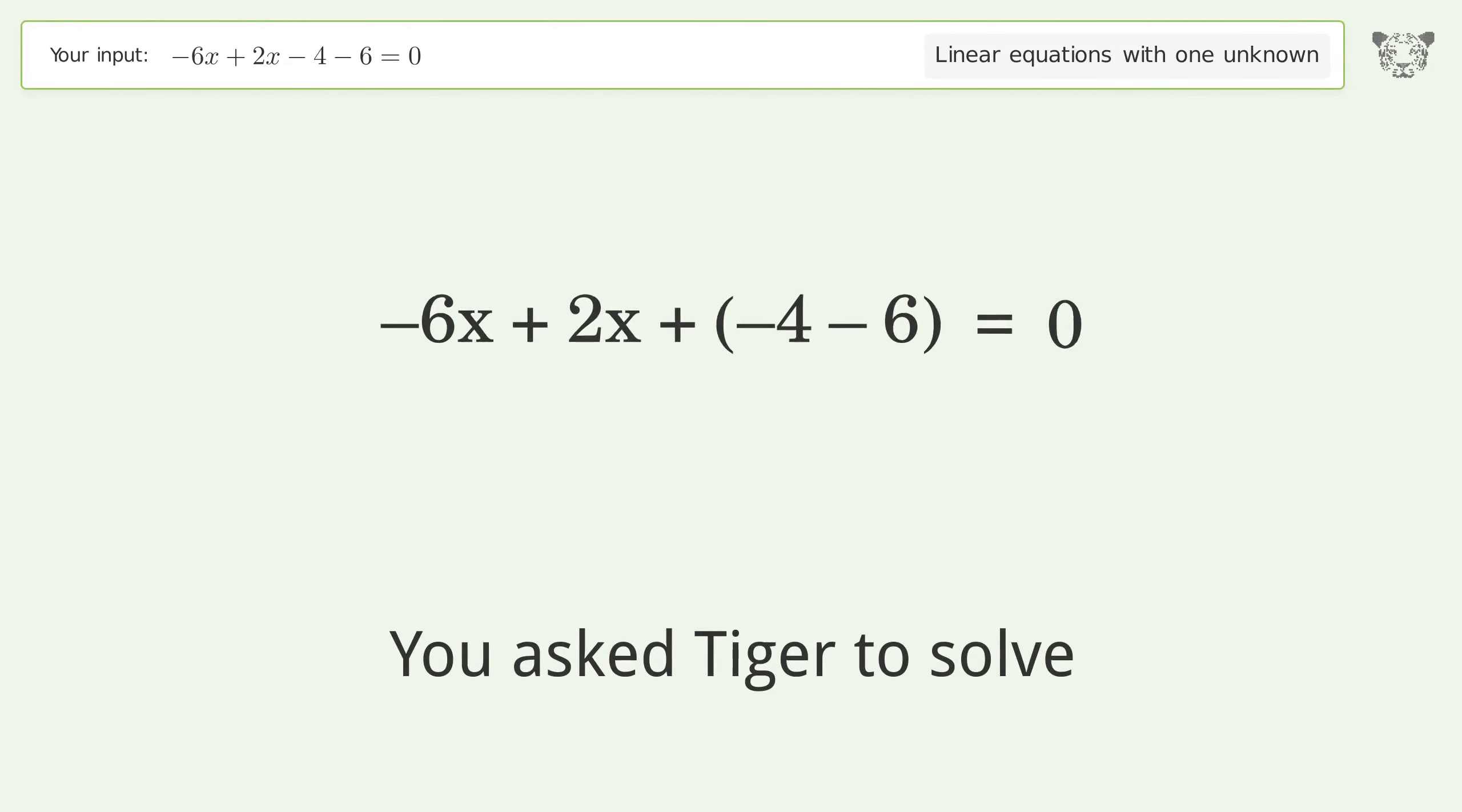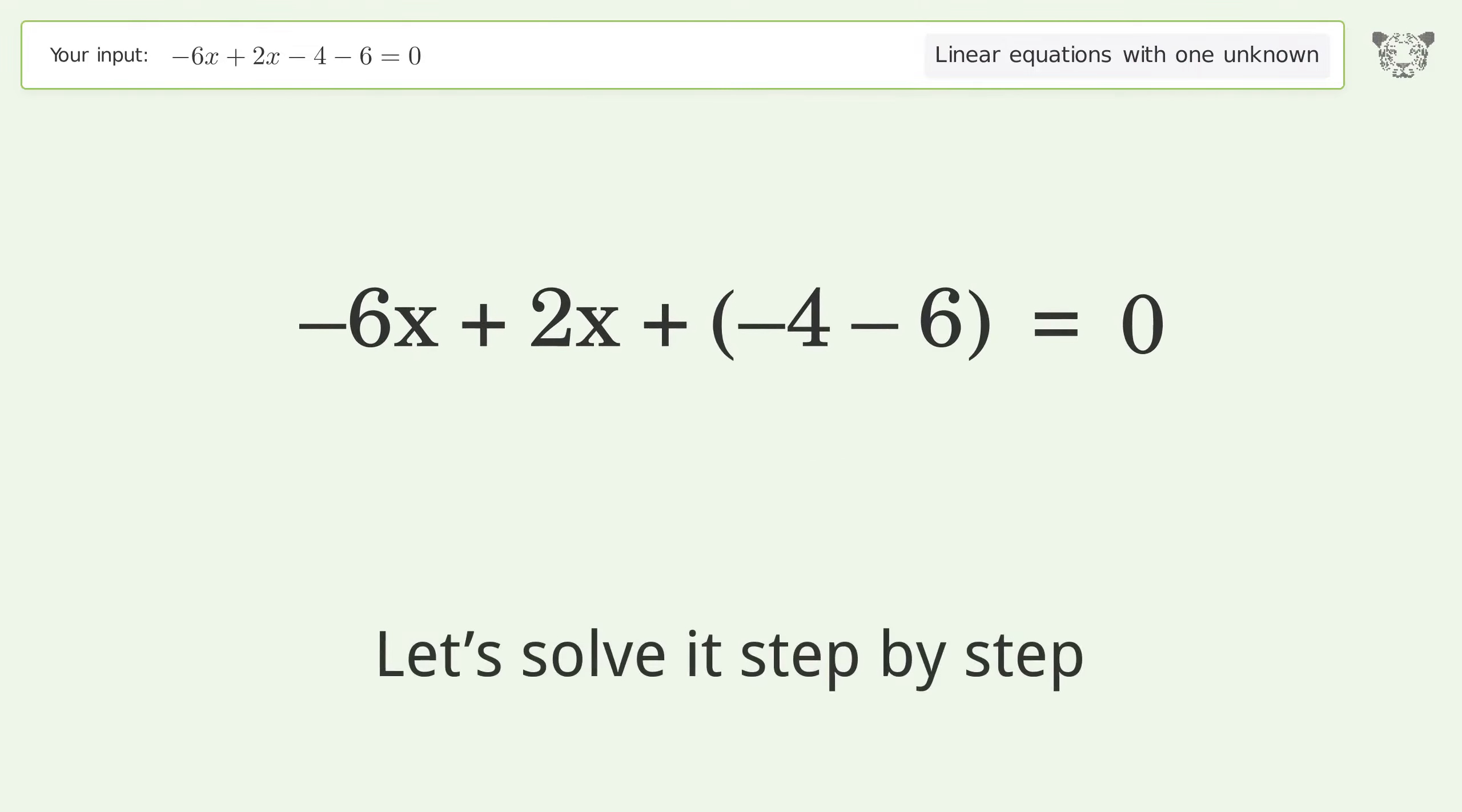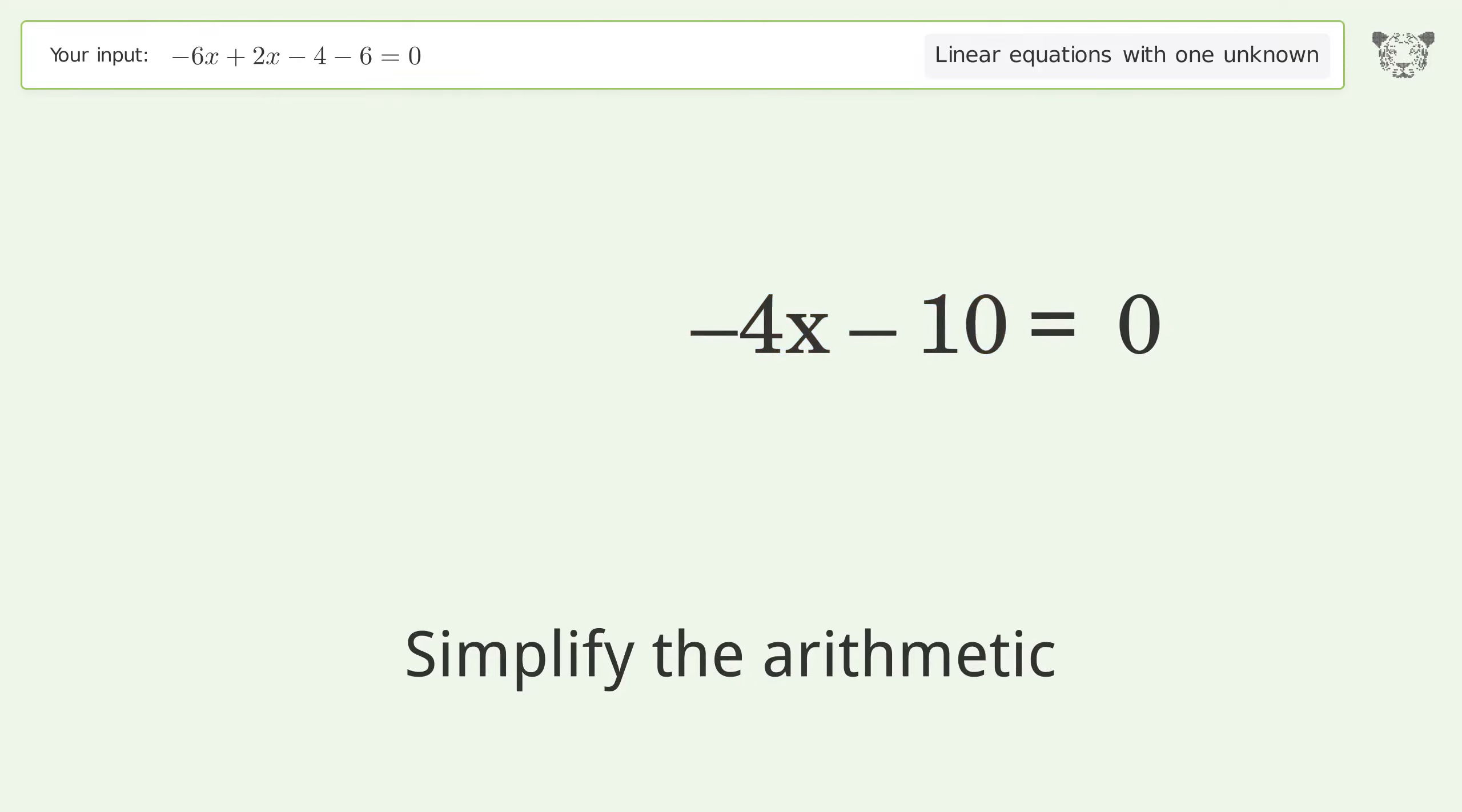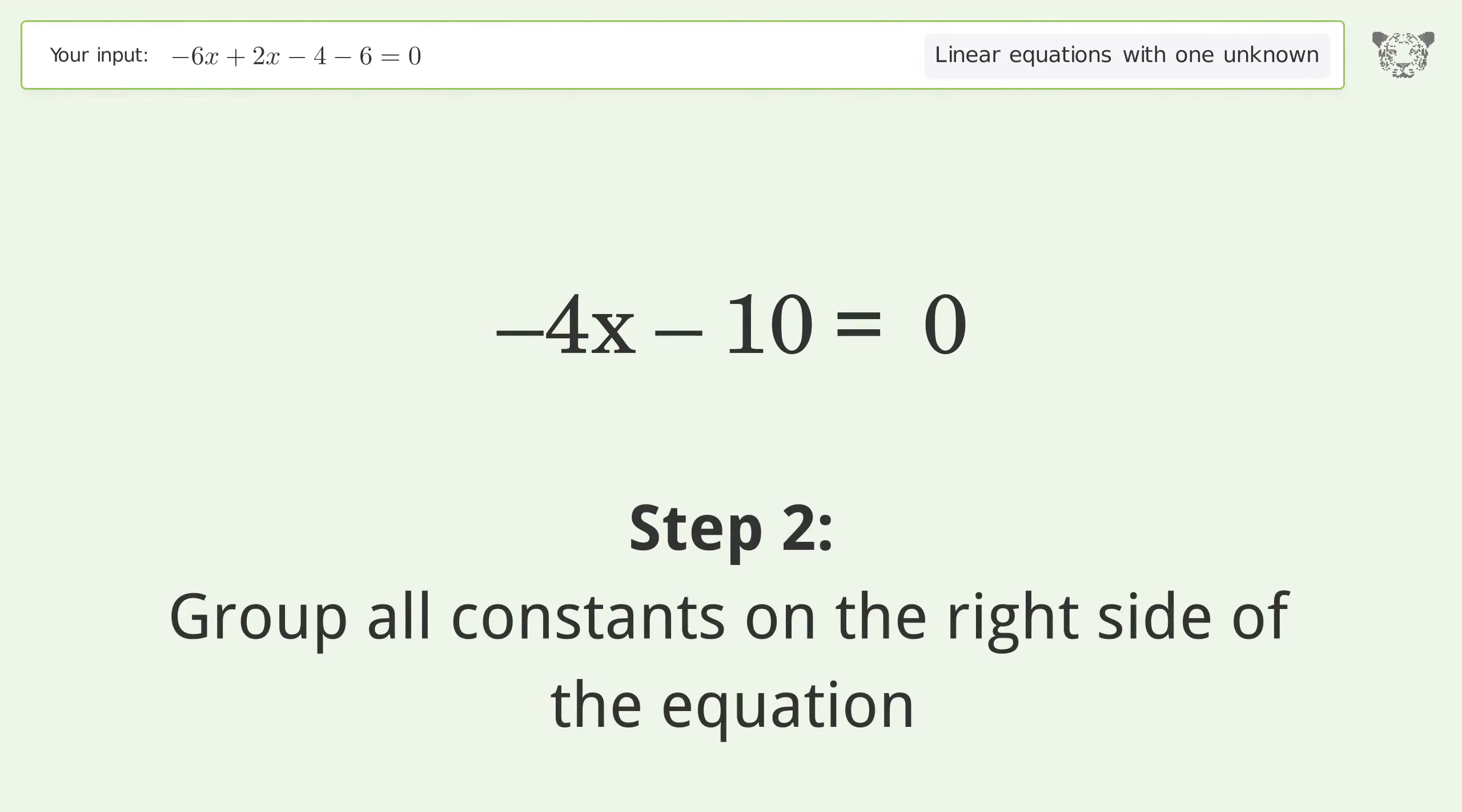You ask Tiger to solve this linear equation with one unknown. The final result is x equals negative 5 over 2. Let's solve it step by step. Simplify the expression, simplify the arithmetic, and group all constants on the right side of the equation.